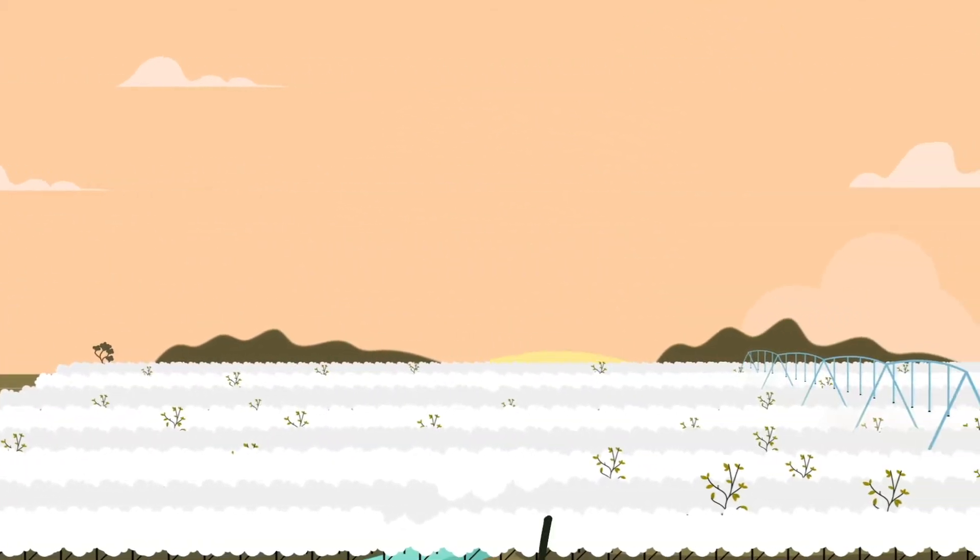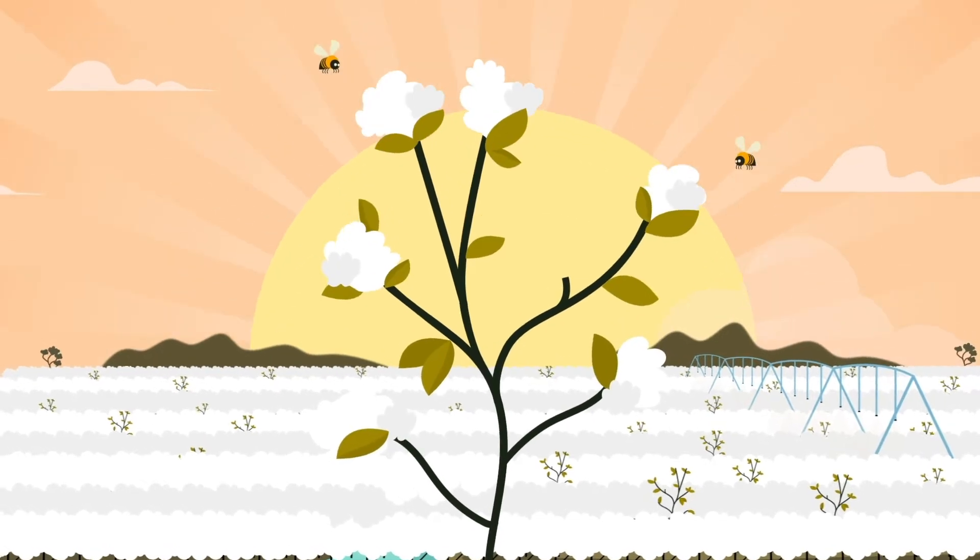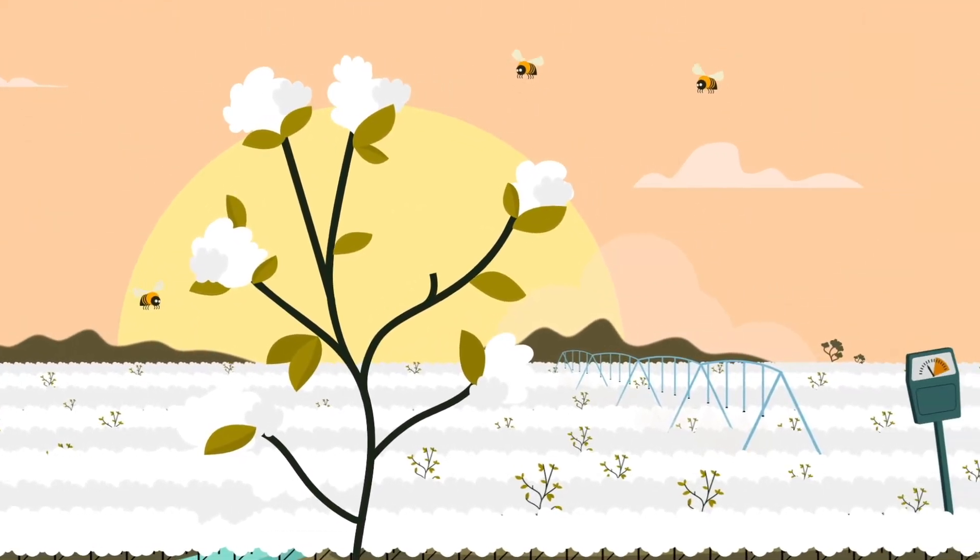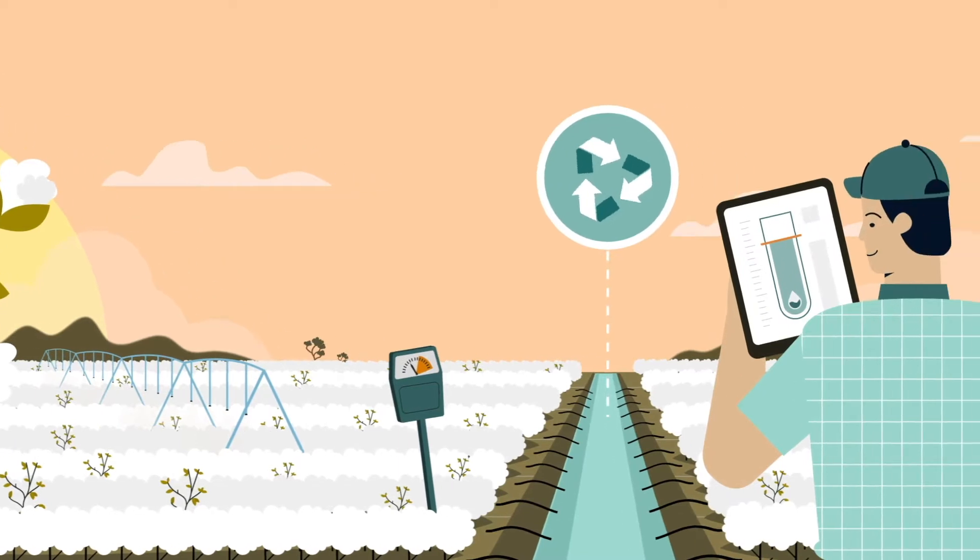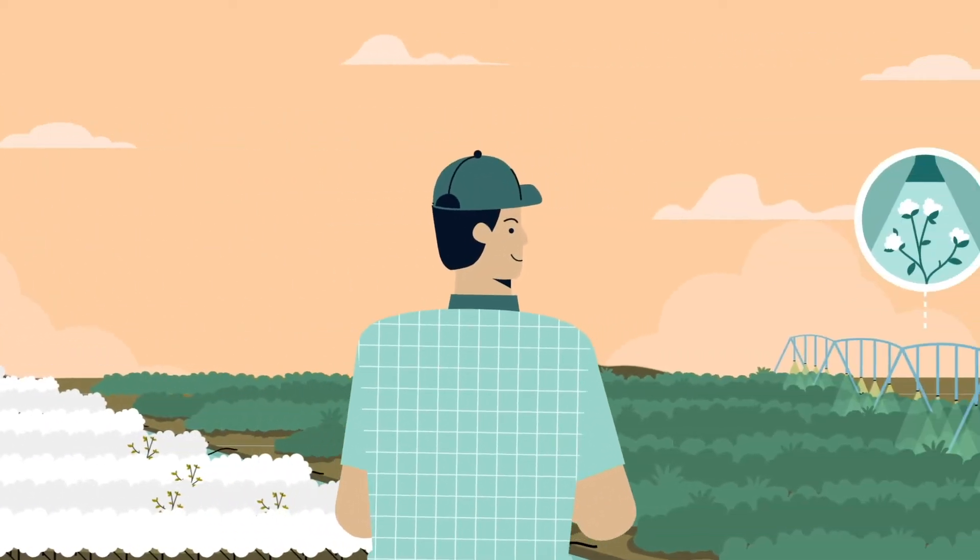Thankfully, we've learned from the past, and cotton farming is very different now. We measure and recycle our water, and only irrigate when the plants really need it.